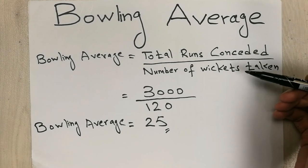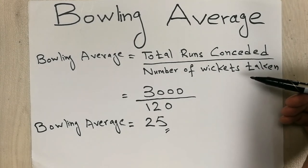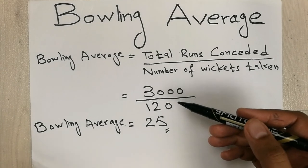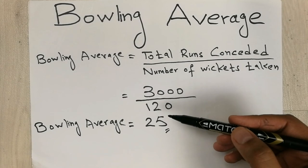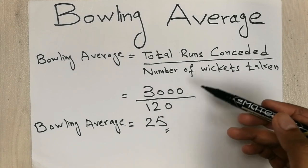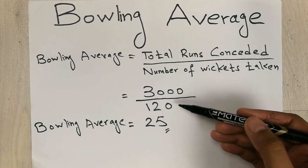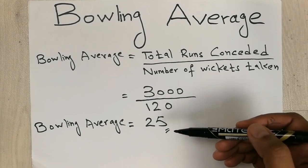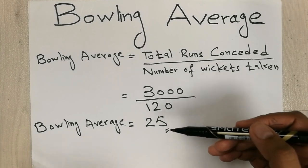So this is how you calculate bowling average in cricket: total runs conceded divided by total number of wickets taken. You put in your values — for example, 3000 runs and 120 wickets — divide them, and you get your bowling average of 25.